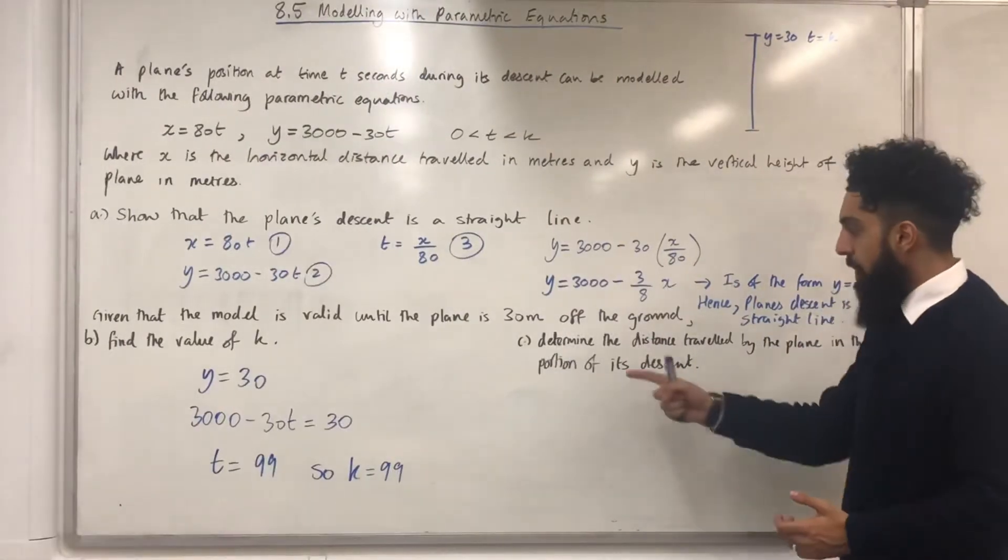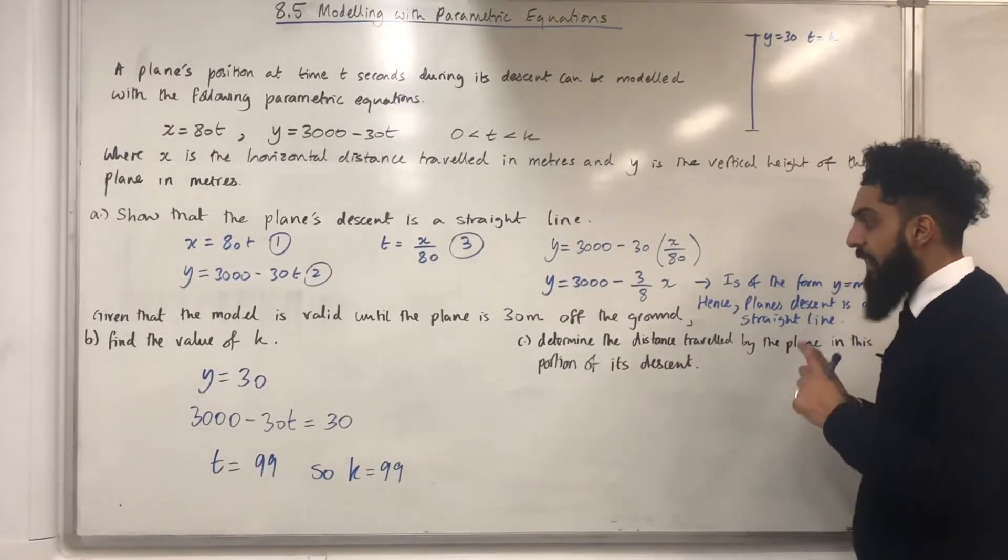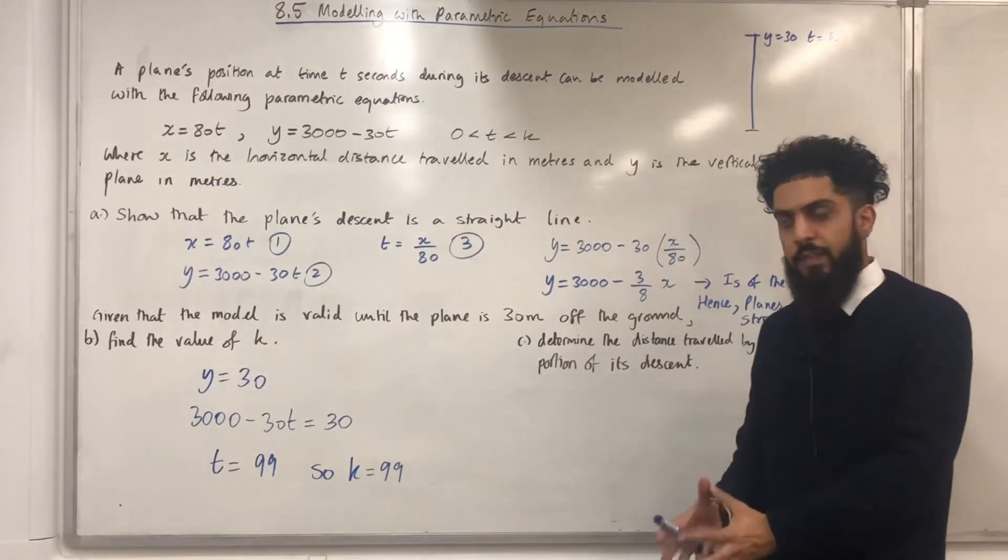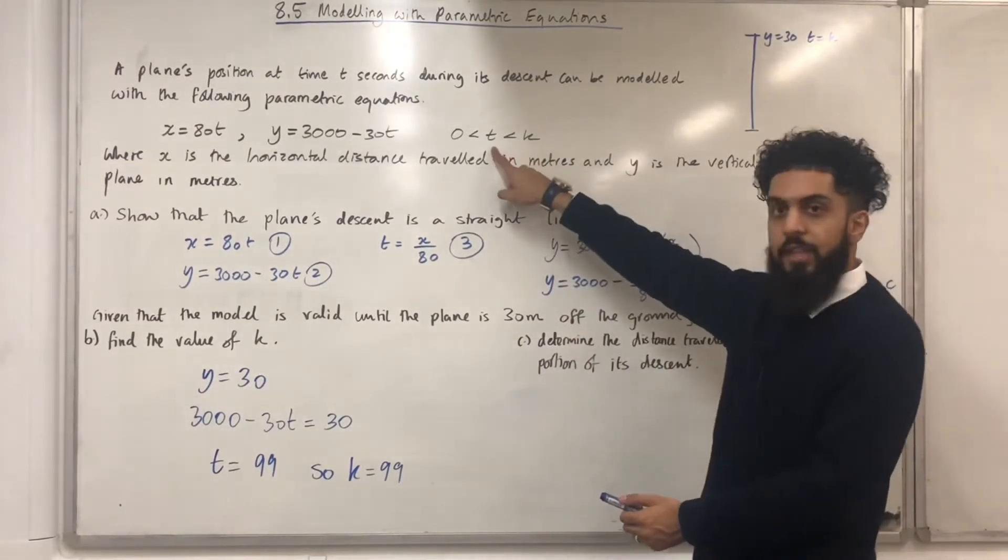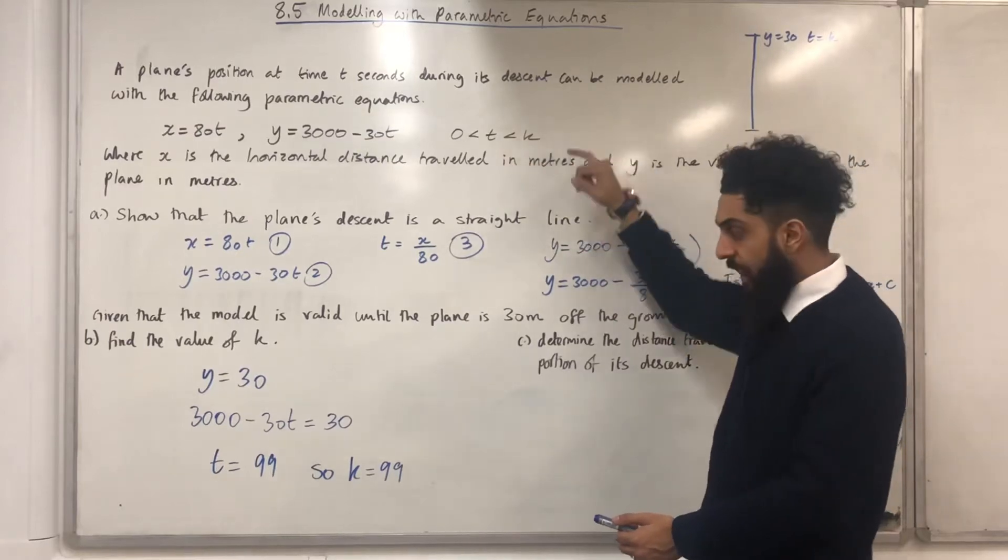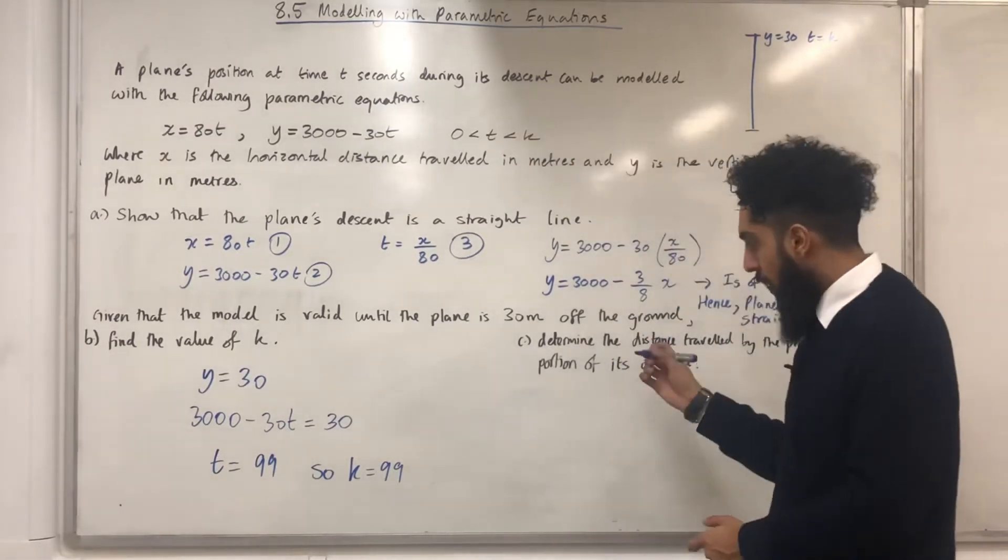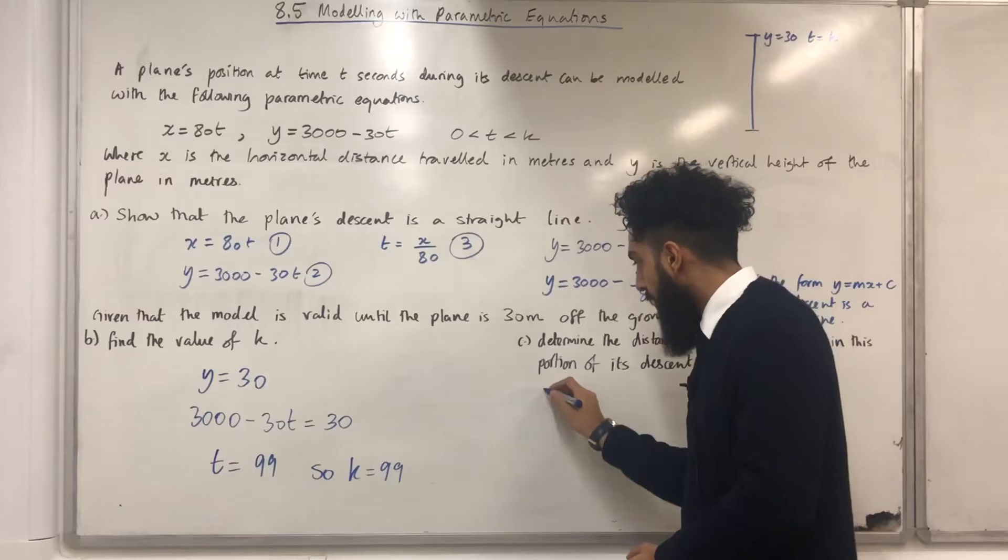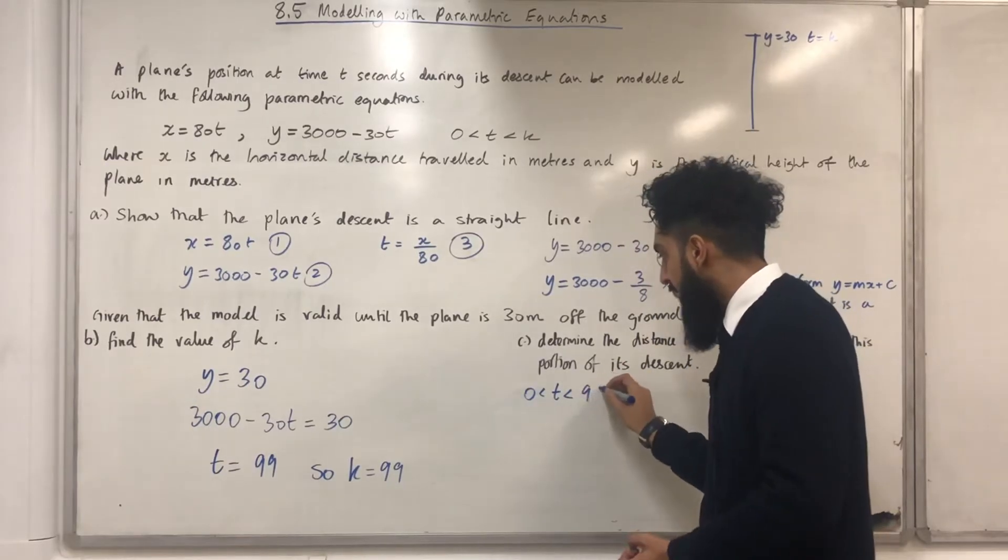Part C. Determine the distance traveled by the plane in this portion of its descent. When it says this portion of its descent, we're looking at t is more than 0 but less than k, where k is 99. We've got t is more than 0 but less than k, which is 99.